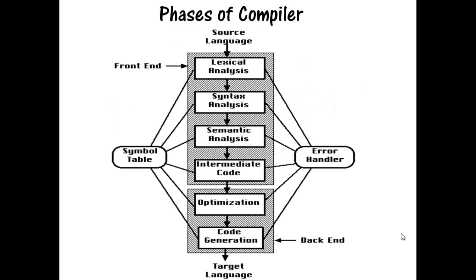Compilation process is a sequence of various phases. There are six phases of compiler: lexical analysis, syntax analysis, semantic analysis, intermediate code generation, code optimization, and code generation. Each phase takes the input from its previous stage, processes it, and feeds its output to the next phase. Symbol table and error handler are the modules that interact with all six phases to store the entities and to handle the errors.